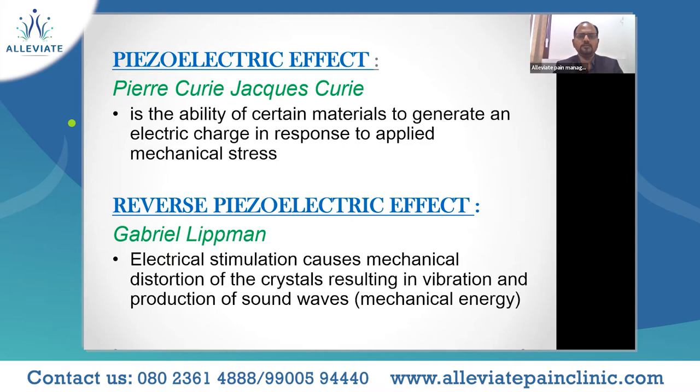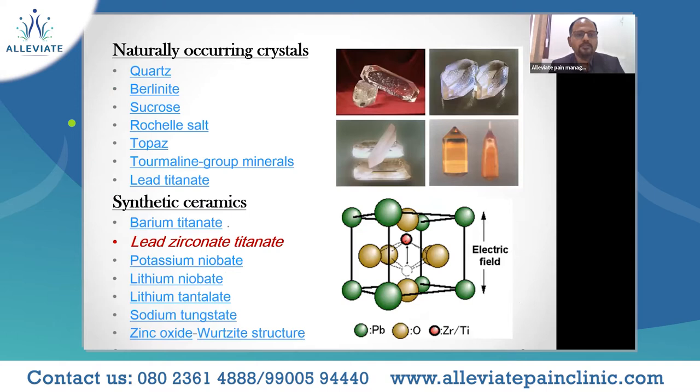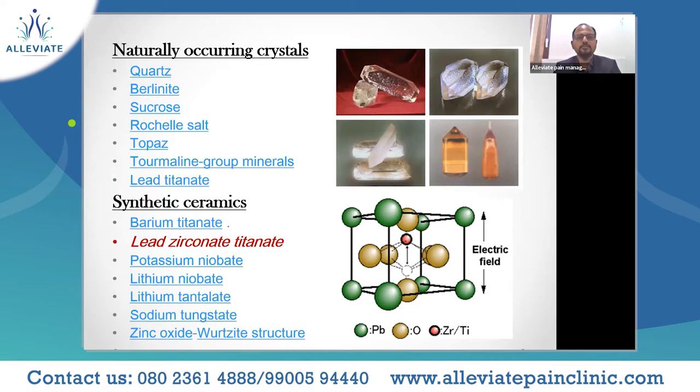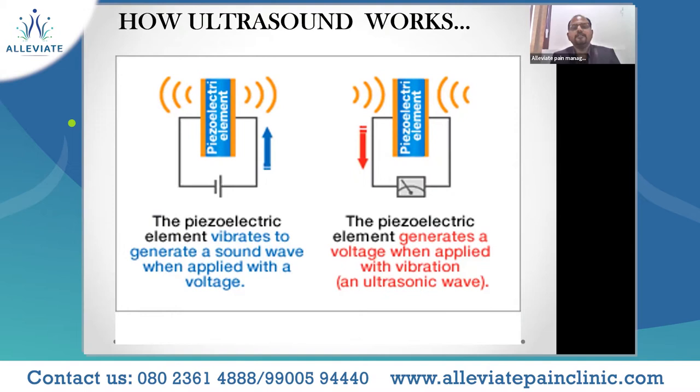Let's see how it actually happens in the ultrasound transducer. There are various naturally occurring crystals like quartz, alanine, sucrose, and topaz. But most importantly, synthetic ceramics — specifically lead zirconate titanate — are used in our clinical practice. This particular crystal is used in the transducer to produce ultrasound waves.